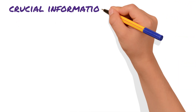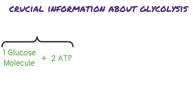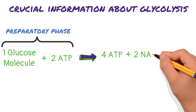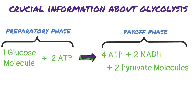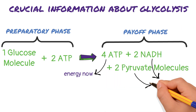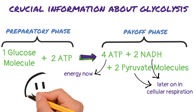The crucial information to understand about glycolysis is that we start with one glucose molecule, add two ATP for the energy investment in the preparatory phase, and produce four ATP, two NADH, and two pyruvate molecules in the payoff phase. The ATP can be used for energy right away, and the NADH and pyruvate will be used later on in cellular respiration. Note that this is not the balanced chemical equation, just a helpful summary for understanding glycolysis.